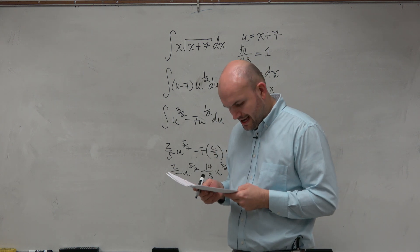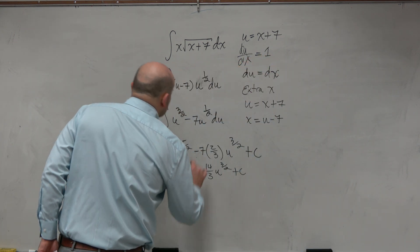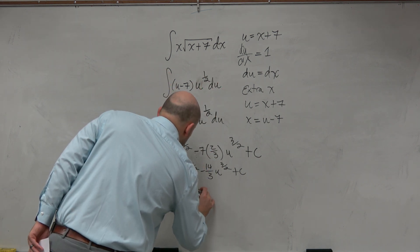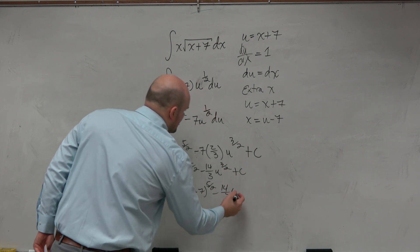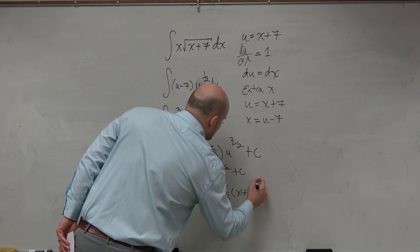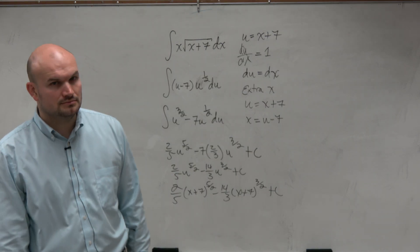And then, ladies and gentlemen, if we had, oh I'm sorry, I've got to plug that back in, no wonder. u to the 5th times, plug back in my u, x plus 7 to the 5 halves minus 14 thirds times x plus 7 to the 3 halves plus C.